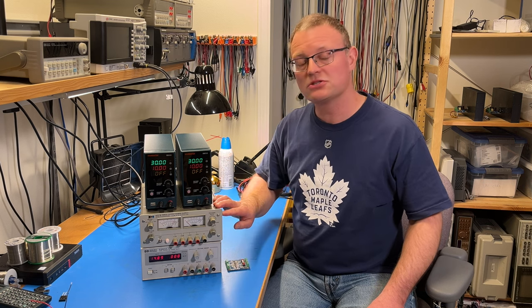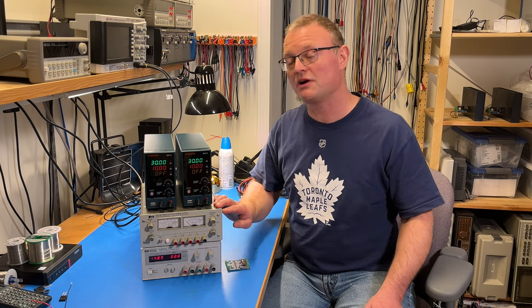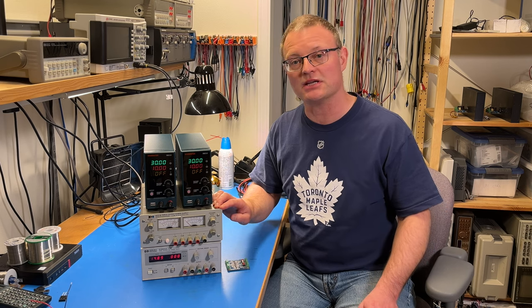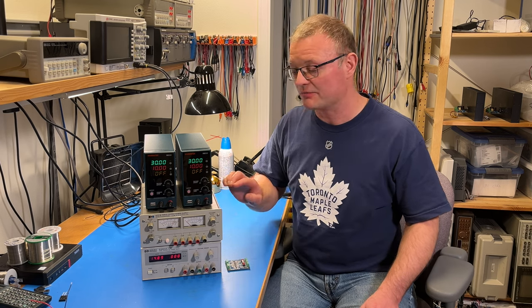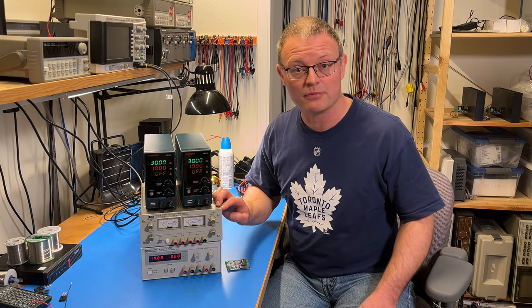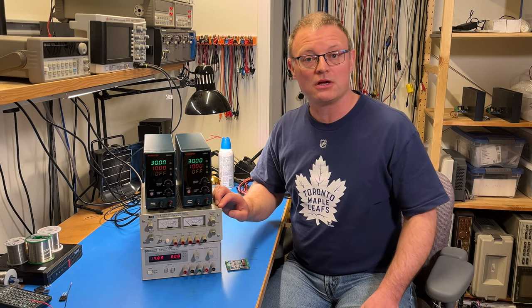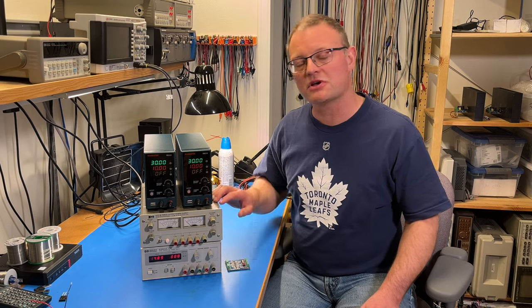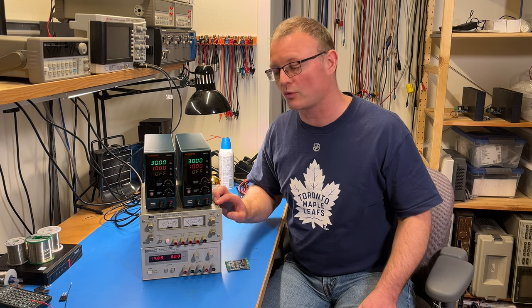The 6237B started rolling off the assembly line somewhere in the mid to late 1970s. And, it is a rock-solid power supply. It is available online for somewhere around $150 and up for one in good condition.